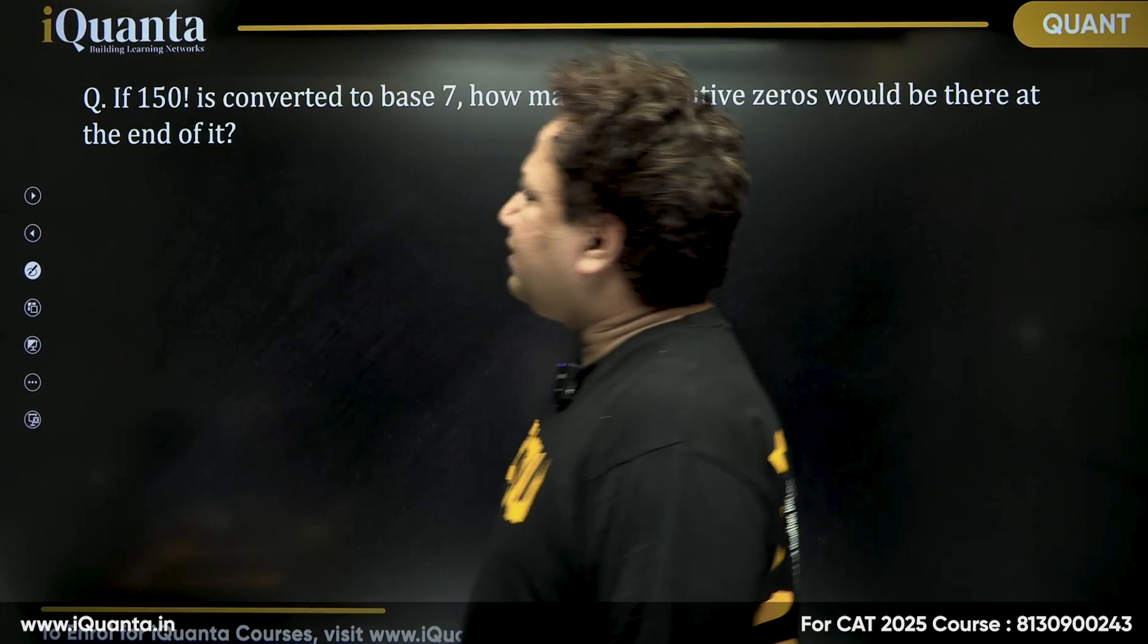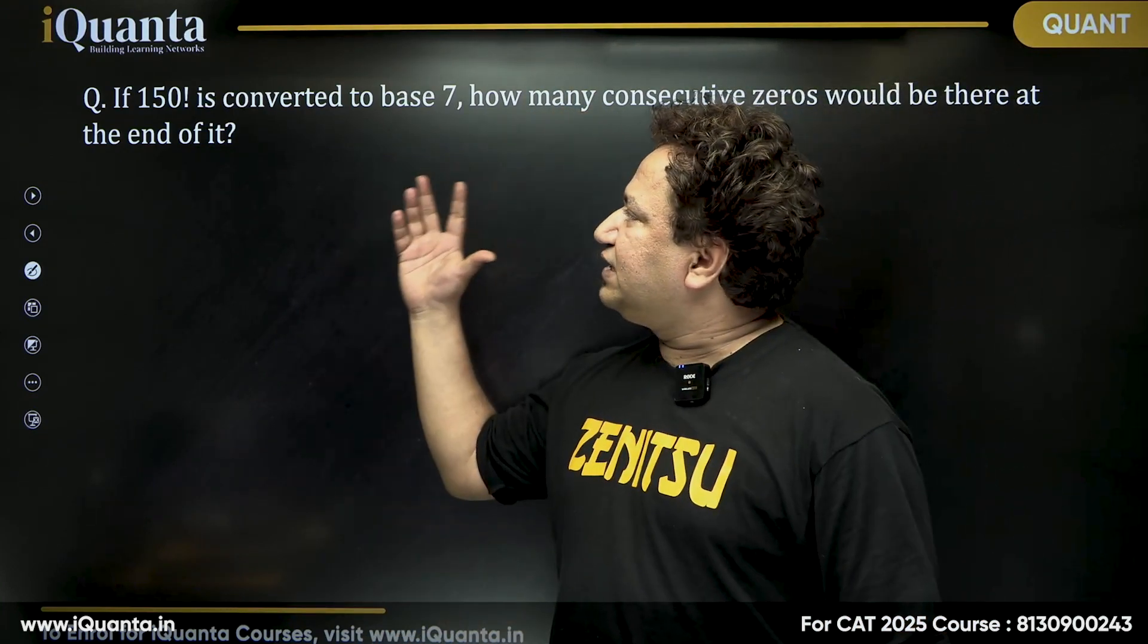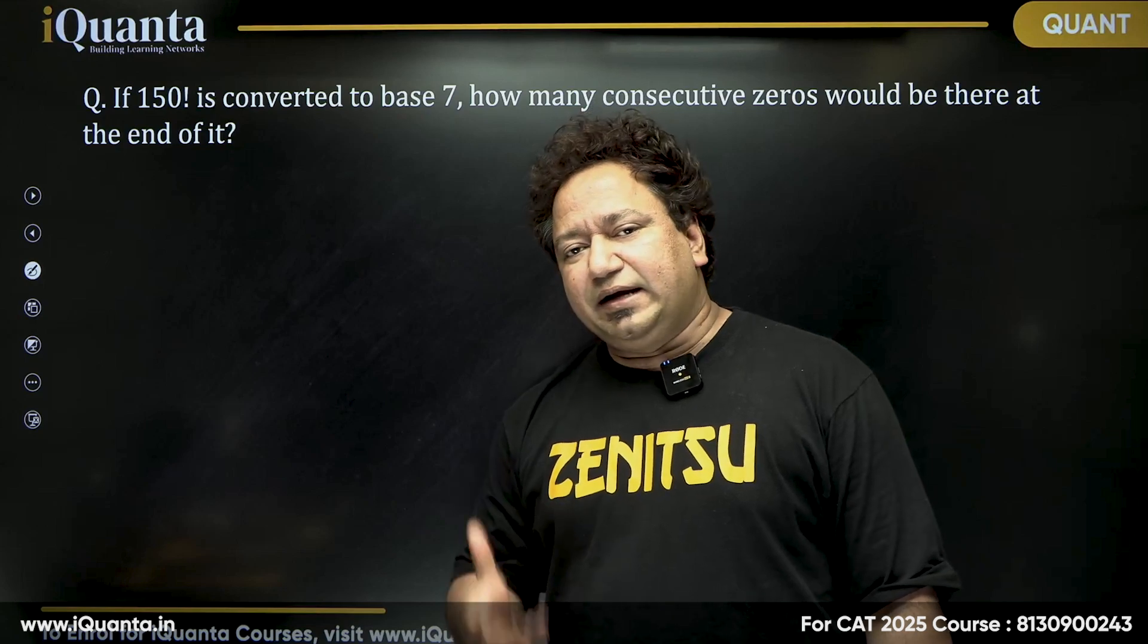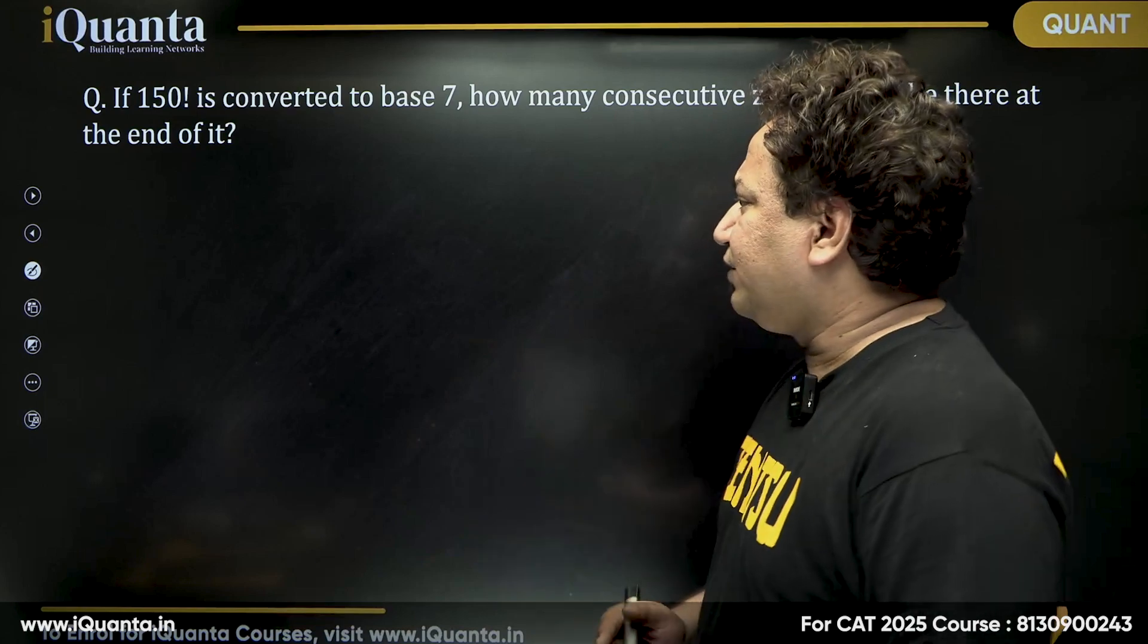So all we need to do is, this question will be rephrased as: what is the maximum power of 7 that can divide factorial 150 completely? Just remember it and that is how we'll be doing it.